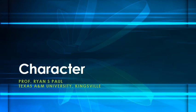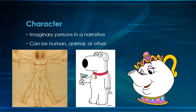In this lecture, I'm going to discuss character and how to think about how characters in stories create meaning. Very simply, a character is just an imaginary person in a narrative, in a story. Characters can be human, they can be animals, or they can be other — objects, or inanimate things, or even principles can be characters in stories. It's whoever or whatever is acting in the story.